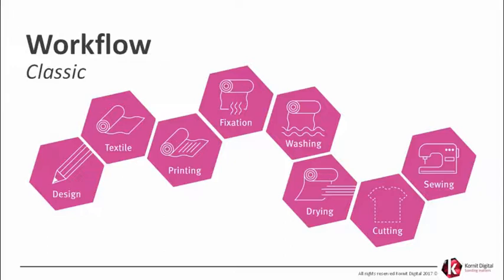Then we need to take care of the textile itself. In many cases, textiles need to be pretreated, and some processes will also require a sampling process. Moving to the printing process, you will need to print a sample, send it back to the designer, get approval, or redo this step again in order to get approval for the printed fabrics. From the printing process, you will need to apply fixation to the printed fabric in order to get the vibrancy and the right color, as well as washability and to fix the actual ink into the fabric.